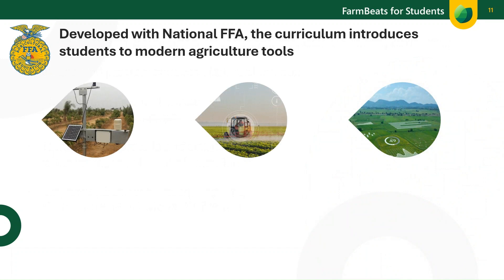FarmBeats for Students was developed in partnership with Microsoft and the National FFA here in the United States. The program combines an affordable micro:bit-based hardware kit with curated curriculum and activities designed to give students hands-on experience with precision agriculture. The learning progression enables students to easily see the impact of modern tools and the opportunities within agriculture, and is designed to show the connection between sensors, data collection, big data, and how large amounts of data are the underpinnings of machine learning and the development of AI-enabled technology.